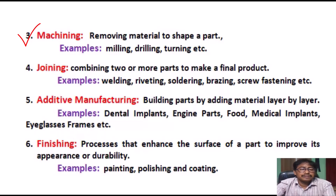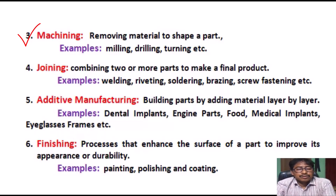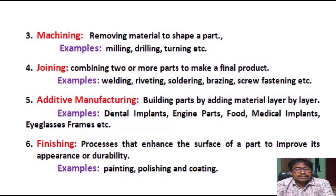Three: Machining — removing material to shape a part. Machining is a manufacturing process where the desired shape is created by removing material from a workpiece. Examples: milling, drilling, turning, grinding, planing, sawing, broaching, electrical discharge machining, etc.